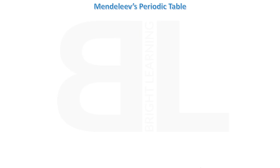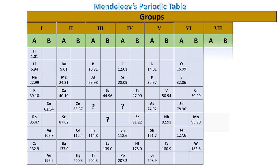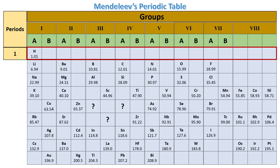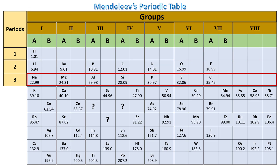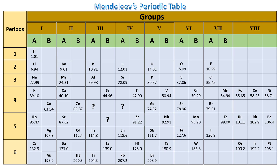Let's have a look at Mendeleev's periodic table. It has eight vertical columns called groups. Each group is further divided into two subgroups, group A and group B. This periodic table has six horizontal rows named as periods. Mendeleev arranged the elements in these rows on the basis of increasing atomic masses.